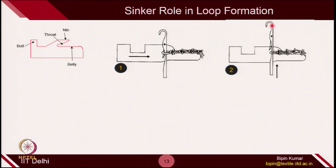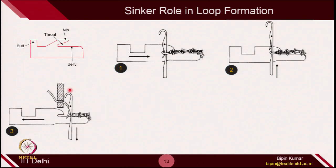Once needle rise, the hook is now free to catch new yarn, and new yarn is fed. Once the new yarn is fed, the downward motion of the needle starts. But at the same time, since the yarn is going to be caught by the needle, you need to pull this yarn in the downward direction. At this moment you have to release the fabric. That's why the sinker starts moving in the backward direction — to release the fabric so that new yarn can go and fit inside the throat part. As soon as the needle starts downward movement, the sinker is moving backward and the fabric is almost released.